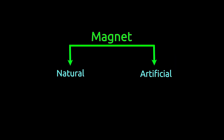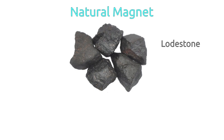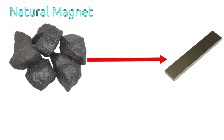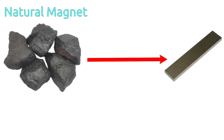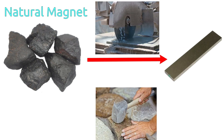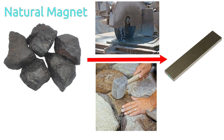Magnets can be found naturally as well as can be made in labs and factories. Natural magnets exist in the form of rocks. Not only magnet, but these rocks contain impurities as well. Converting rock to desired shape requires lots of cutting and hammering. These processes may result in loss of magnetism.